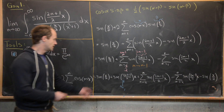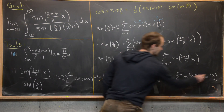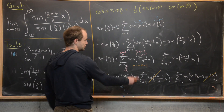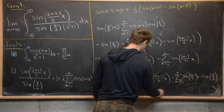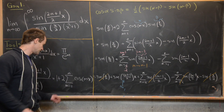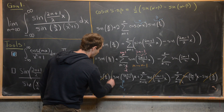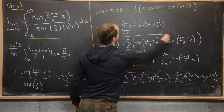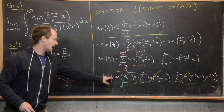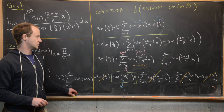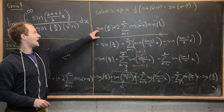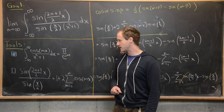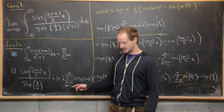Now we're in great shape. The sine(x/2) terms cancel, and the two sums from m=2 to n cancel each other. We're left with sine((2n+1)/2 · x). Dividing everything by sine(x/2) gives exactly the identity we wanted to establish.